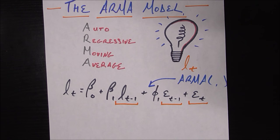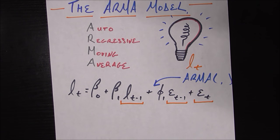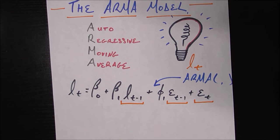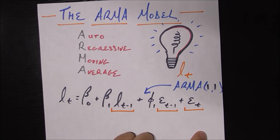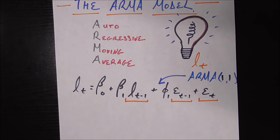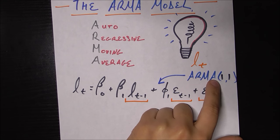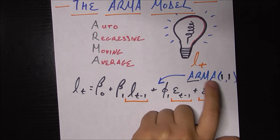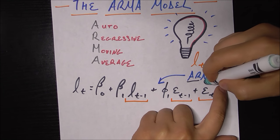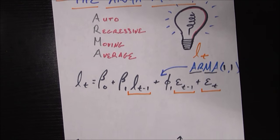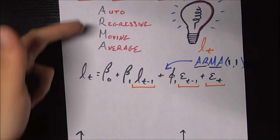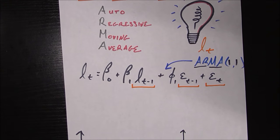You decide to model your number of light bulbs using an ARMA(1,1) model. An ARMA(1,1) model is the basic ARMA model, pretty much the minimum you need. The 1 comma 1 corresponds to the AR and the MA. The first one corresponds to the order of the autoregressive part and the second one corresponds to the order of the moving average part. The ARMA(1,1) process is a combination of all the terms you would see in those individual models.